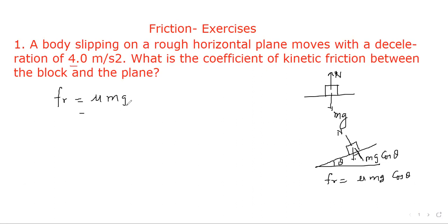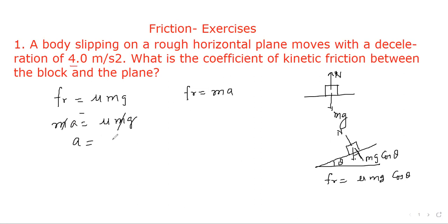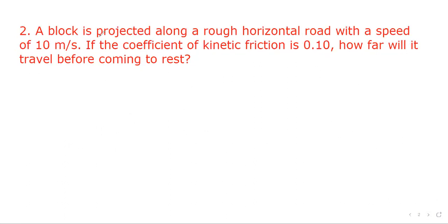Since friction provides the deceleration, we can say friction equals ma. So ma = μmg, the m cancels out, and a = μg. Therefore μ = a/g. Here a is 4 and g is 10, so μ = 0.4.